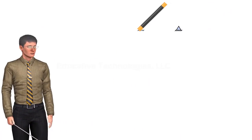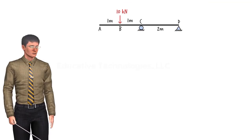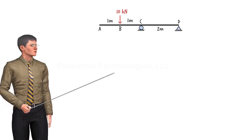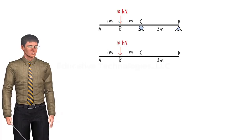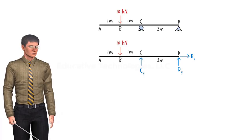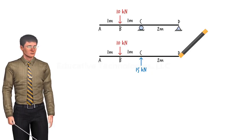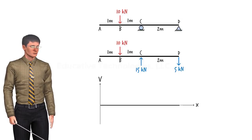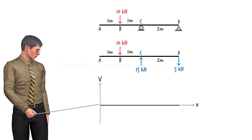Let us go through another example showing how to draw the shear diagram directly from the free body diagram. Consider this beam subjected to a concentrated load of 10 kilonewtons at point B. First, we draw the free body diagram for the beam, then use the static equilibrium equations to calculate the support reactions. Starting from the left end, since there is no force present at A, the starting value for shear is zero. Since there is no load applied within segment AB, shear remains zero throughout the segment.